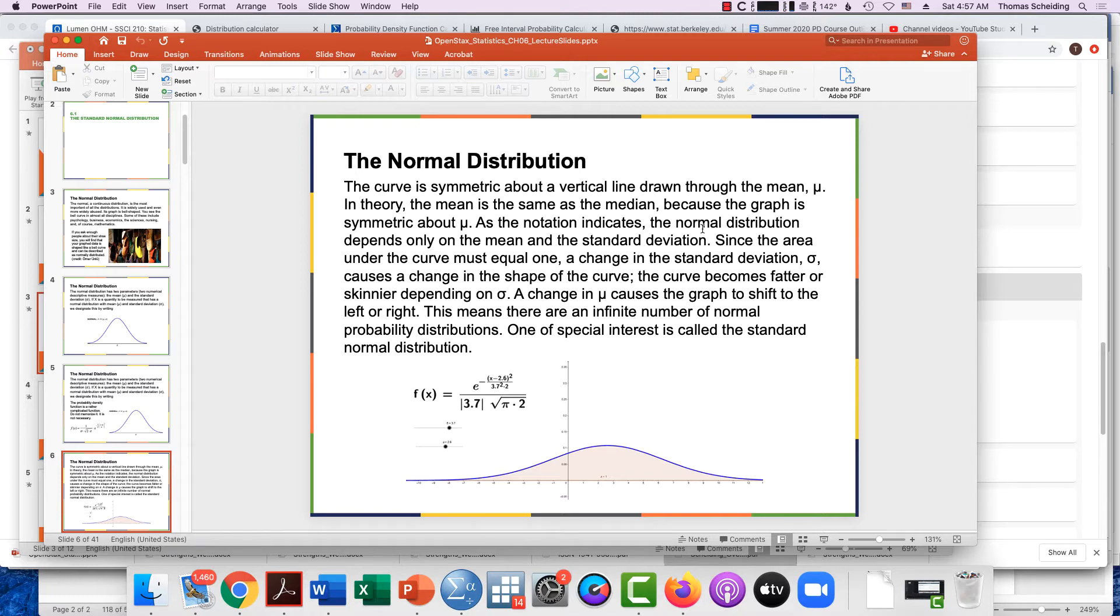Sometimes we have long tails on one side or the other, but for the most part a calculation of the mean and the standard deviation is going to be good enough for you to be able to calculate any of the probabilities.